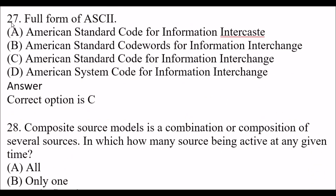Next question: Full form of ASCII — Option A: American Standard Code for Information Inter-caste. Option B: American Standard Code Words for Information Interchange. Option C: American Standard Code for Information Interchange. Option D: American System Code for Information Interchange. This is a very important question. The right answer is option C, American Standard Code for Information Interchange — note it is 'code', not 'code word'.